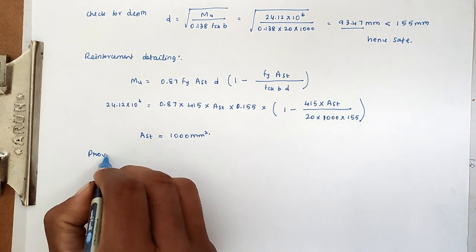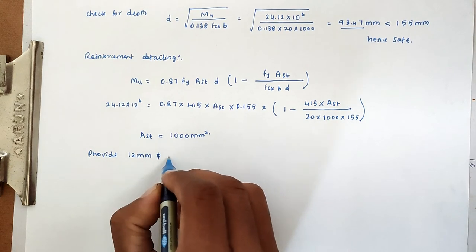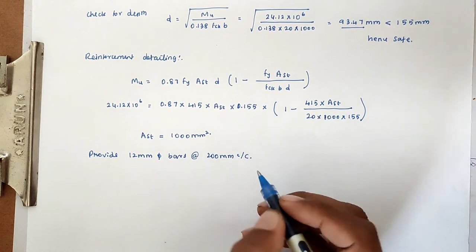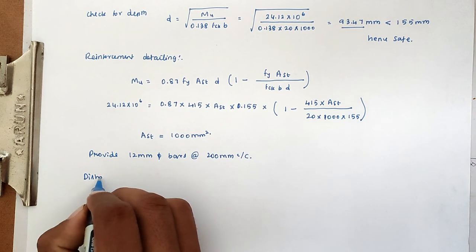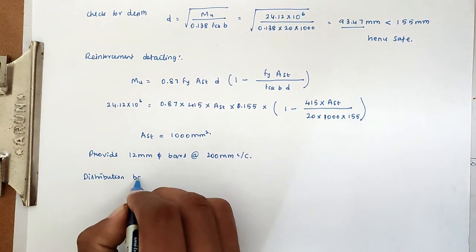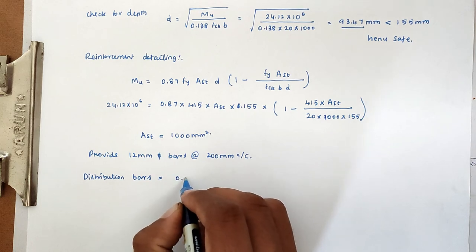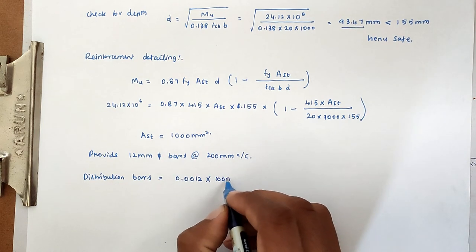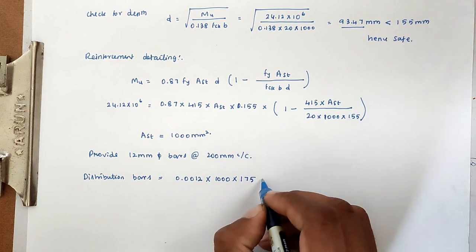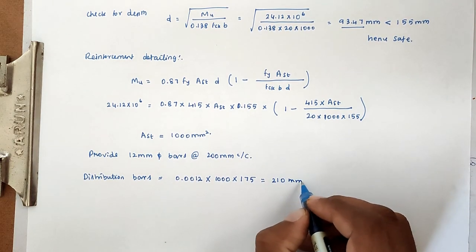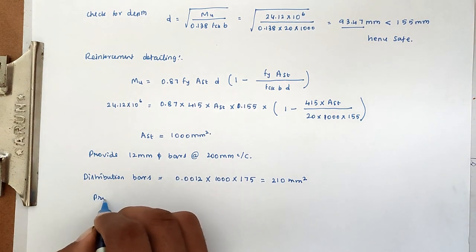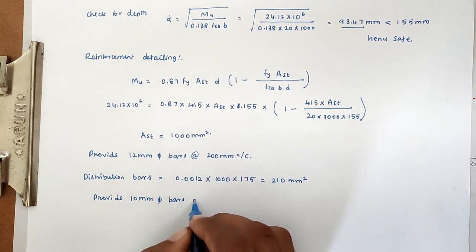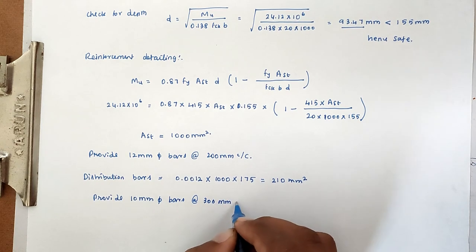We provide 12mm dia bars at 200mm center to center as main reinforcement. For distribution bars: 0.12% × 1000 × 175 = 210 mm². We provide 10mm dia bars at 300mm center to center as distribution bars.